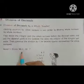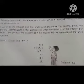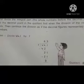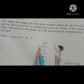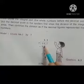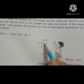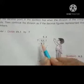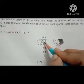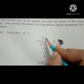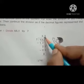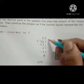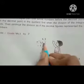Divide 44.1 by 7. In the 7 table, 44 is not there, but 42 is — 6 sevens are 42. Write 6, and 44 minus 42 equals 2. Now the integer part is finished, so we take the decimal point to the quotient. Then bring down the 1 — making 21. 3 sevens are 21.